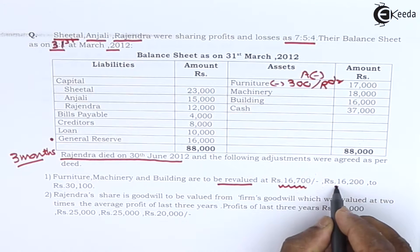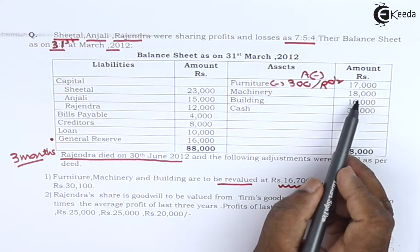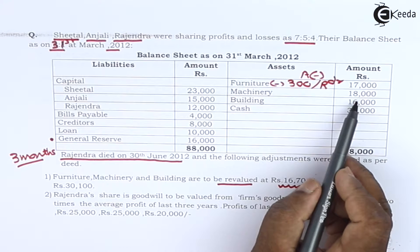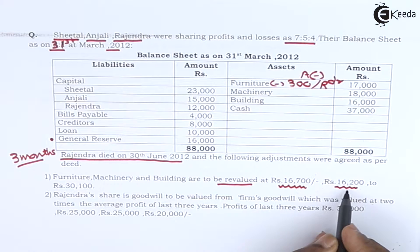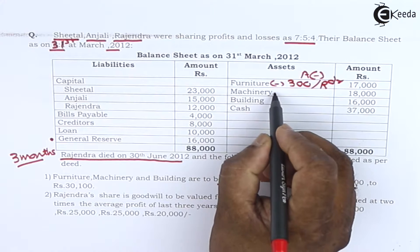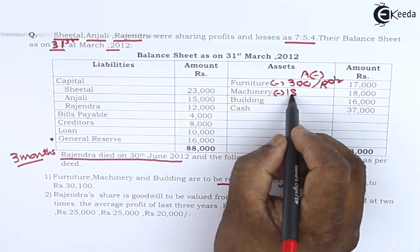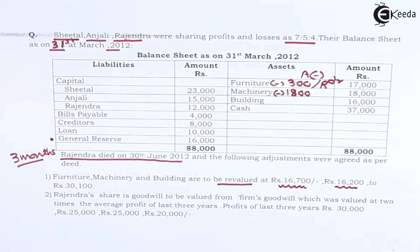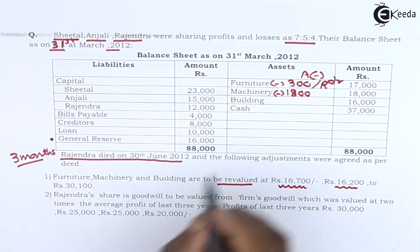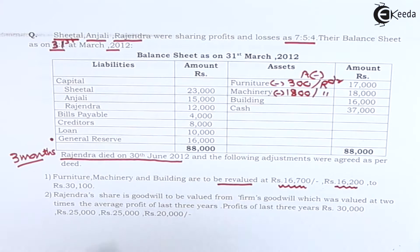Machinery's revised value is 16,200, and the book value is 18,000 — that means there is a reduction of 1,800 from machinery. We are required to decrease machinery by 1,800, and the second effect will be revaluation account debit.